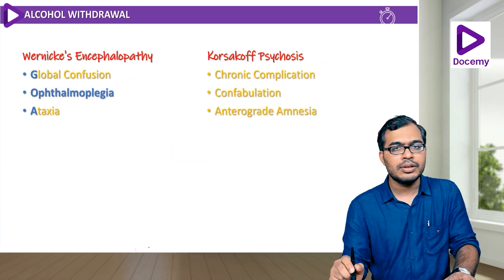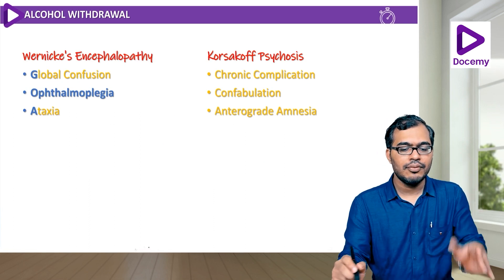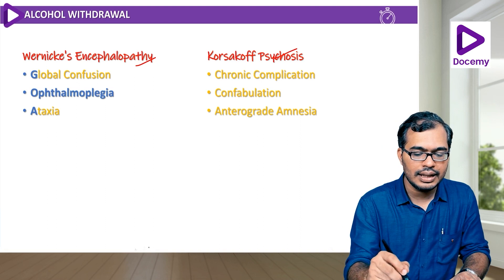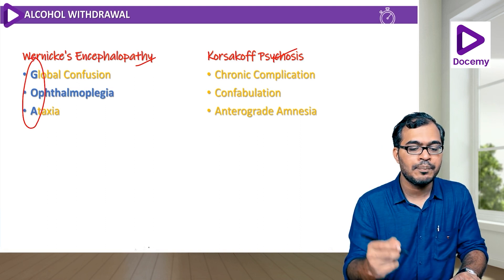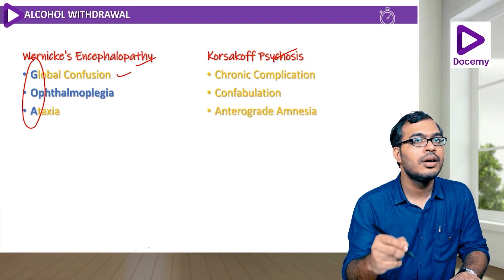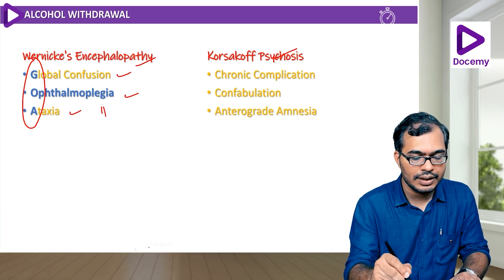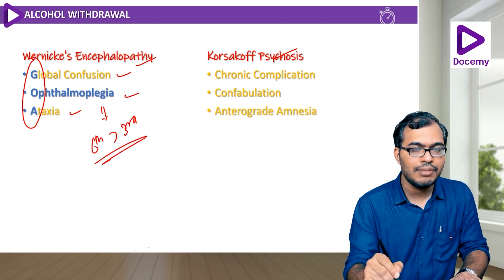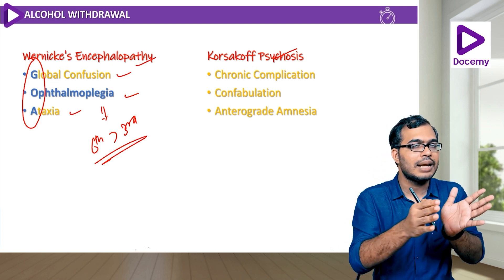Coming to chronic complications of alcohol withdrawal: Wernicke's encephalopathy and Korsakoff's psychosis. For Wernicke's, the mnemonic is GOA — G for global confusion, O for ophthalmoplegia, A for ataxia. Very importantly, the sixth nerve is affected more than the third nerve, and ophthalmoplegia is the fastest sign to resolve after giving thiamine therapy.